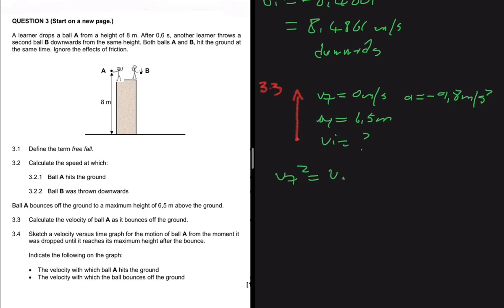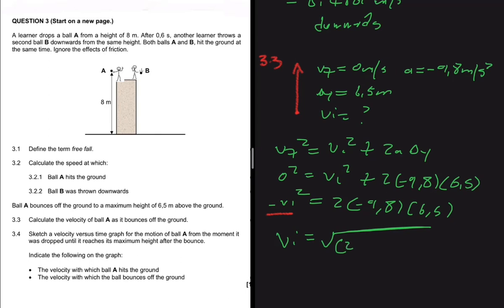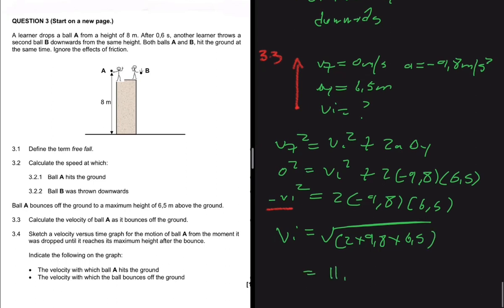Using vf² = vi² + 2aΔy: zero equals vi² plus 2 multiplied by minus 9.8 multiplied by 6.5. Rearranging and dividing both sides by minus 1, vi equals the square root of 2 multiplied by 9.8 multiplied by 6.5, giving an initial velocity of 11.29 meters per second upwards — the velocity at which ball A bounces off the ground.